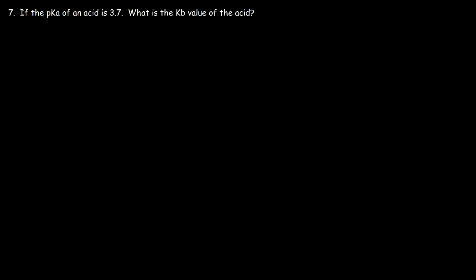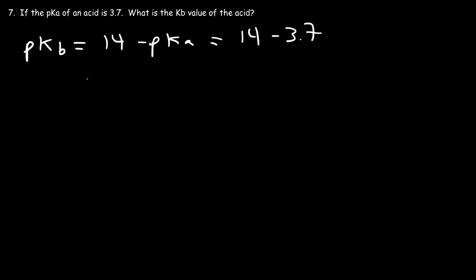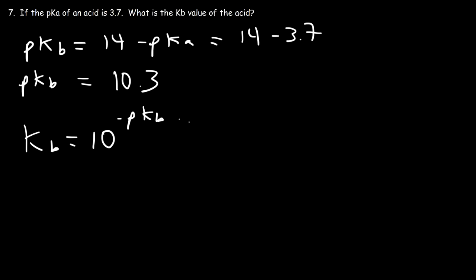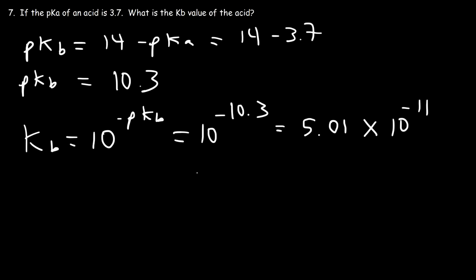Number 7. If the pKa of an acid is 3.7, what is the Kb value of the acid? First, calculate pKb, which is 14 minus the pKa. So that's 14 minus 3.7. 14 minus 3 is 11, and 11 minus 0.7 is 10.3. Now that we have pKb, to calculate Kb it's simply 10 raised to the negative pKb. That's 10 to the negative 10.3, which comes out to be 5.01 times 10 to the minus 11. That's a simple way to calculate Kb from pKa.